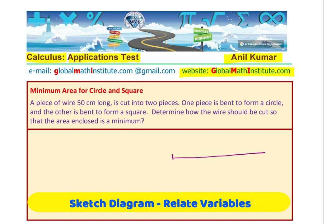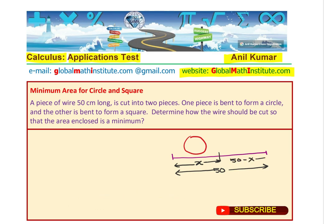Let's say we have a wire which is 50 cm long. If we cut a part of it, which is x cm and transform that into a circle, the other remaining part will be 50 minus x. With that, let us make a square.